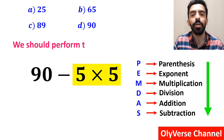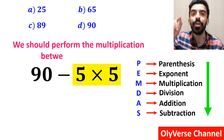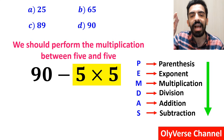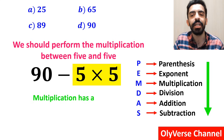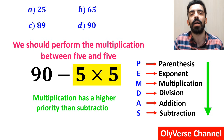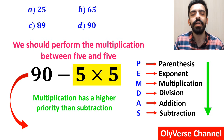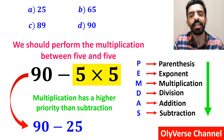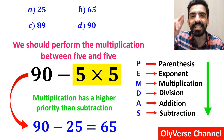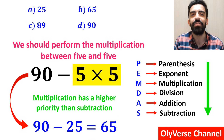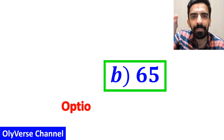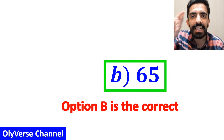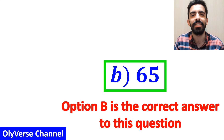In the next step, we should perform the multiplication between 5 and 5, because multiplication has a higher priority than subtraction. So this expression simplifies to 90 minus 25. And finally, we get the answer 65. That's great — option B is the correct answer to this question.